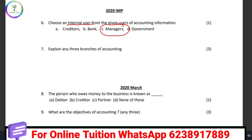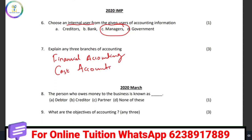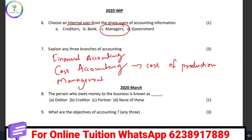Explain any three branches of accounting. The first branch is financial accounting. Financial accounting is a branch that covers the trading account, profit and loss account, and financial results. The second is cost accounting — it deals with the cost of production. The third is management accounting — it deals with decision making purposes. Those are the three branches of accounting.